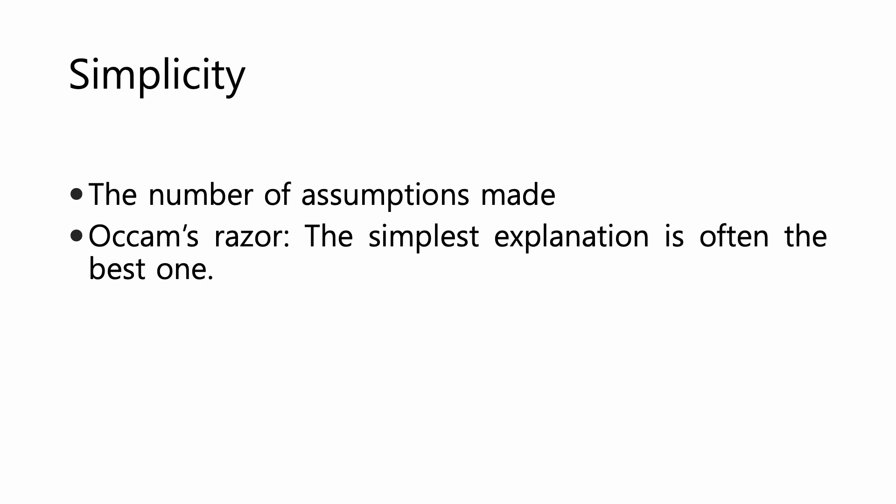Simplicity means the number of assumptions made by a theory. Generally speaking, a theory that makes the least number of assumptions is a more simple and better theory. The word simplicity does not connote easy — it means the theory does not multiply unnecessary assumptions. There is a principle called Occam's razor, put forth by William of Occam, a medieval philosopher and scientist, which says the simplest explanation is often the best one — a theory that does not multiply unnecessary assumptions is a better theory.